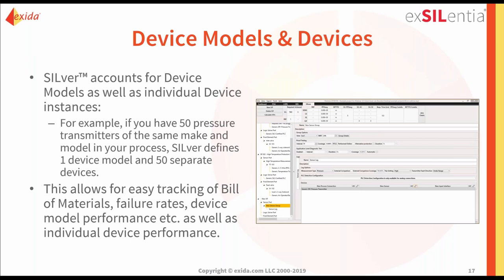Device models are a representation of a particular make and model of a transmitter. Once specified within your project, it's made available for all future selections from an easy drop-down list, so you can simply pick from your project-preferred vendors. You may have one device model but 50 separate devices, and the tool keeps track of all of them. Eventually, in operational and maintenance phases, you can add serial numbers. By linking all devices to a particular device model, you can easily determine failure rates and look at overall device performance.